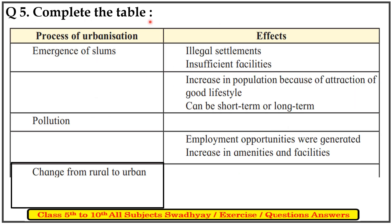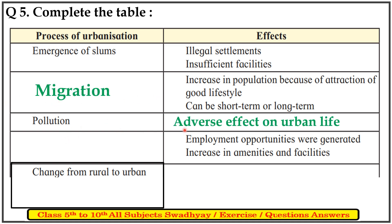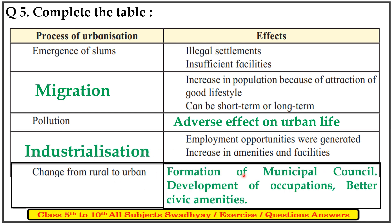Question 5: complete the table. The second option mentions migration, pollution and its adverse effects on urban life. Next, industrialization. And last, formation of municipal council, development of occupations, and better civic amenities.